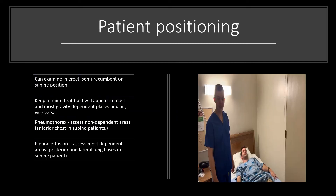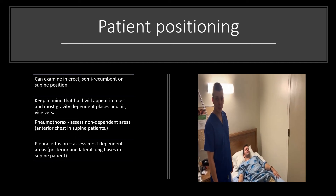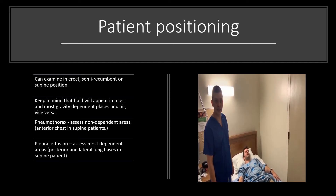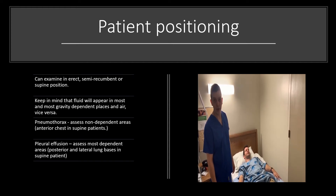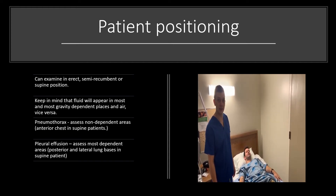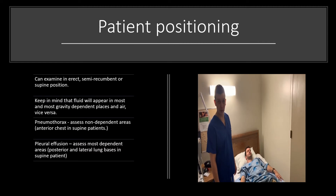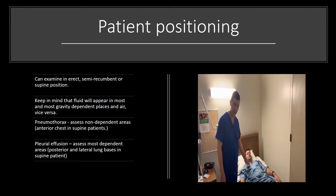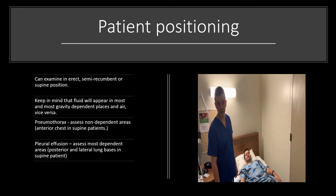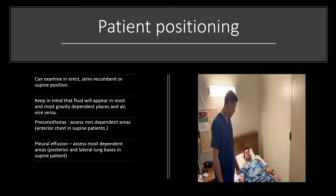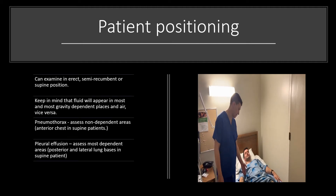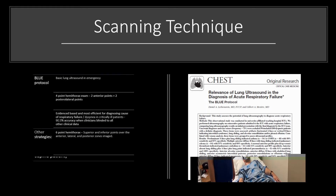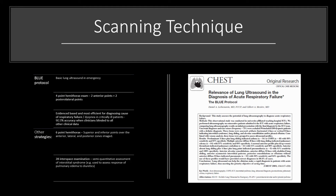Next we'll discuss patient positioning. The important thing to keep in mind is the difference between fluid and air and where they go. Air tends to go in the most non-dependent places and fluid tends to go into the most dependent places. So when we're looking for pneumothorax or air, we would want the patient ideally in a semi-recumbent position and examine specifically the anterior chest wall. When we're looking for fluids — specifically consolidations or pleural effusions — we want the patient supine and be examining the lateral and posterior aspects of the chest.